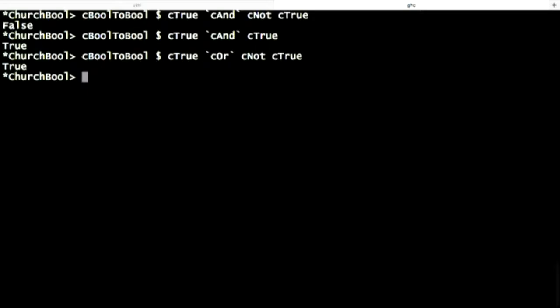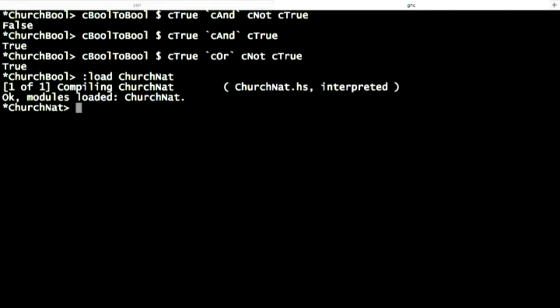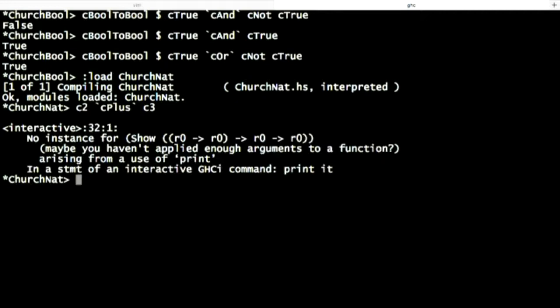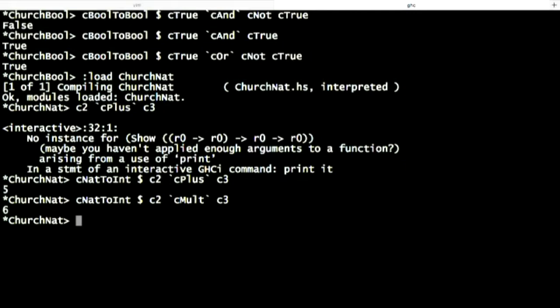So if we go here and go load church nat. So now we can do C2 C plus C3, C nat to int. Yeah. Got it. Alright. Cool. So now we're doing the arithmetic. If we change that to multiplication. Yeah. So we've just rebuilt arithmetic out of nothing. Just out of this primitive concept of a lambda function.